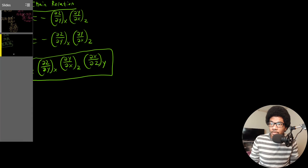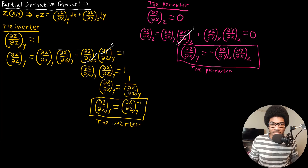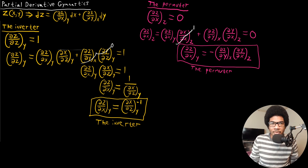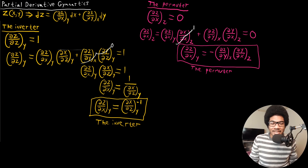Those are the three partial derivative gymnastics moves you need to be familiar with in physical chemistry: the inverter, the permuter, and Euler's Chain Relation. You don't need to derive them every time — you just need to know the boxed results and be able to use these relationships. But it's useful to understand where they come from and why they're actually valid.